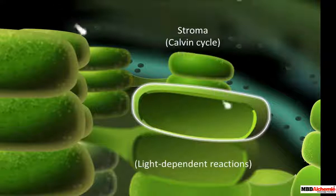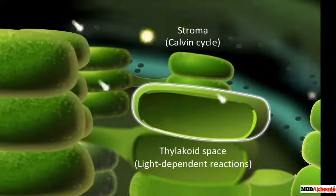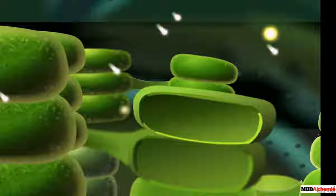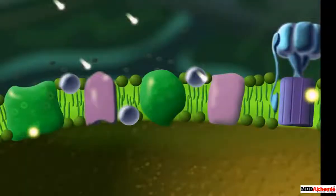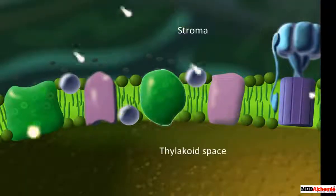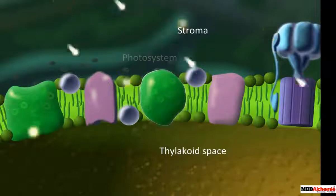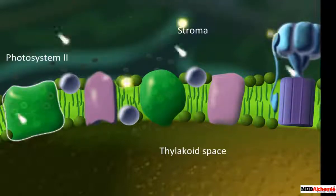The light-dependent reactions occur in the thylakoid. In this process, conversion of light energy to chemical energy is initiated. This work is intended to produce the energy that will be used later in the stroma to manufacture sugars.